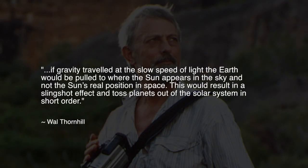If gravity traveled at the slow speed of light, the Earth would be pulled to where the Sun appears in the sky and not the Sun's real position in space. This would result in a slingshot effect and toss planets out of the solar system in short order.